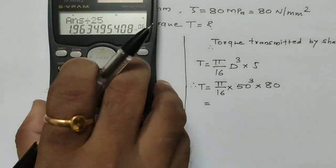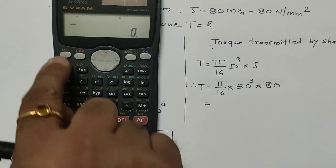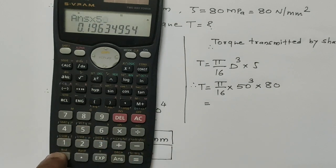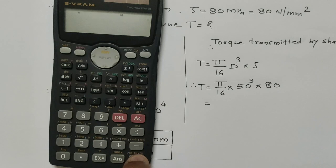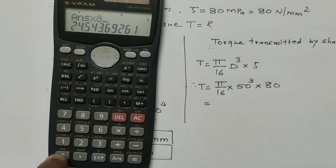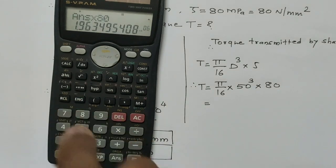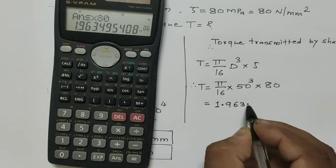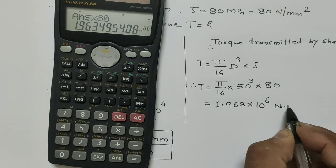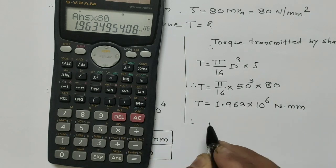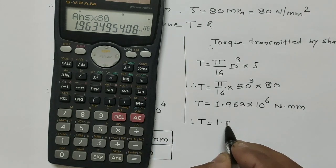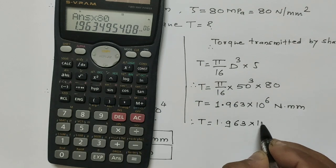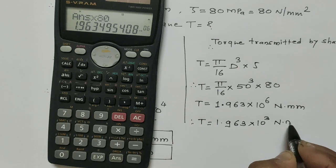Therefore T = π/16 × 50³ × 80. For calculation it is very easy. In engineering notation we will get 1.963×10⁶ Newton millimeter. We can convert into Newton meter by dividing by 1000, so it becomes 1.963×10³ Newton meter.